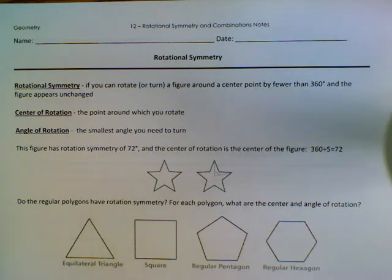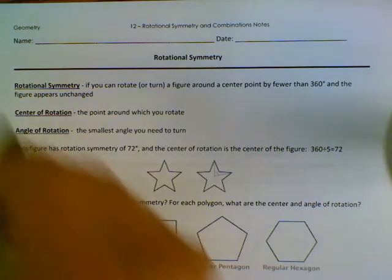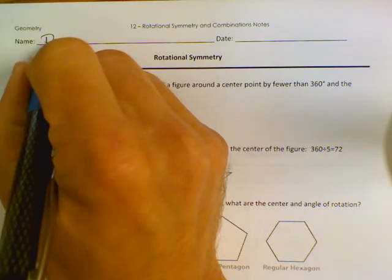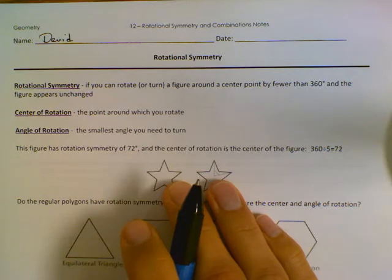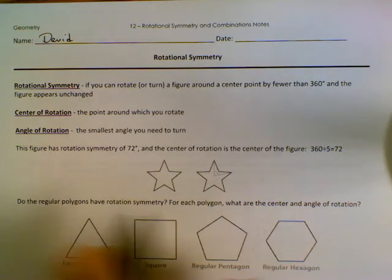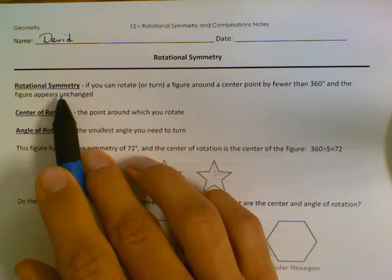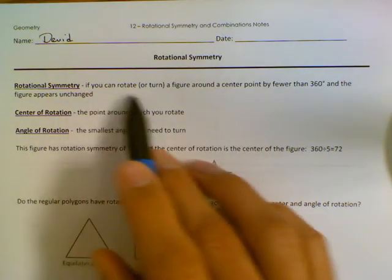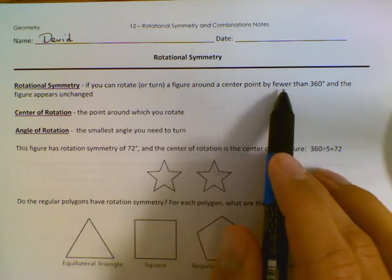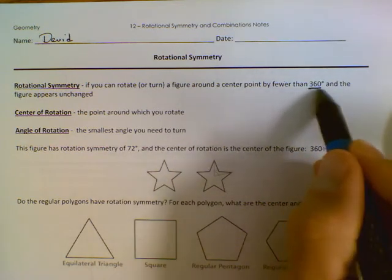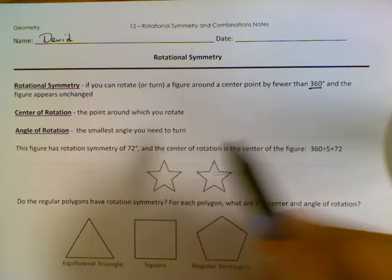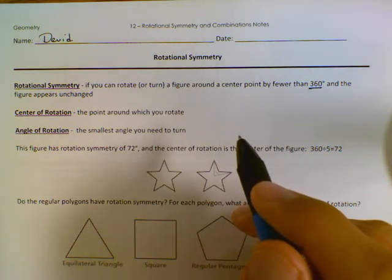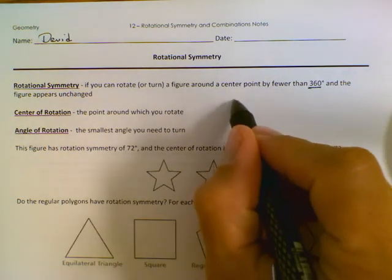Hi folks, in today's lesson we're going to be learning about rotational symmetry, so grab a pen and get ready. First, put your name at the top and let's read through some of these words. Rotational symmetry: if you can rotate or turn a figure around a center point by fewer than 360 degrees and the figure appears unchanged. I immediately think of something like a flower petal, or a four-leaf clover.